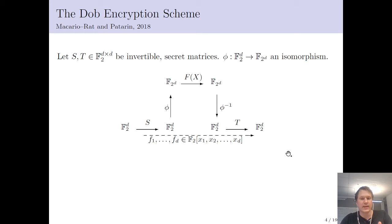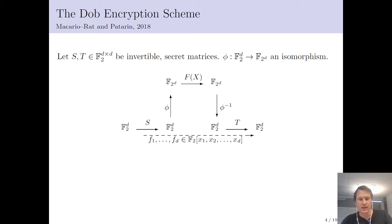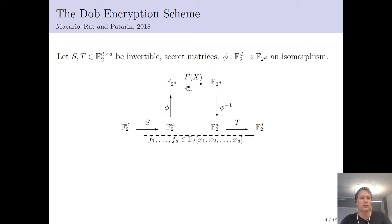This is the standard setup for big field encryption schemes. You choose two invertible matrices, then you have your extension field isomorphism. You start by applying one of your matrices, then go up to the extension field and apply some sort of simple function polynomial over your extension field, chosen such that it's easy to invert. Then you go down again and apply the last matrix. Composing everything from left to right gives you your public key, and these polynomials will be quadratic if you have chosen your f properly.